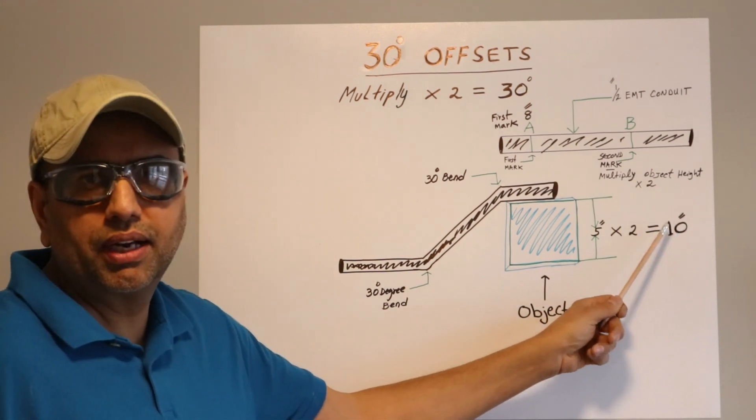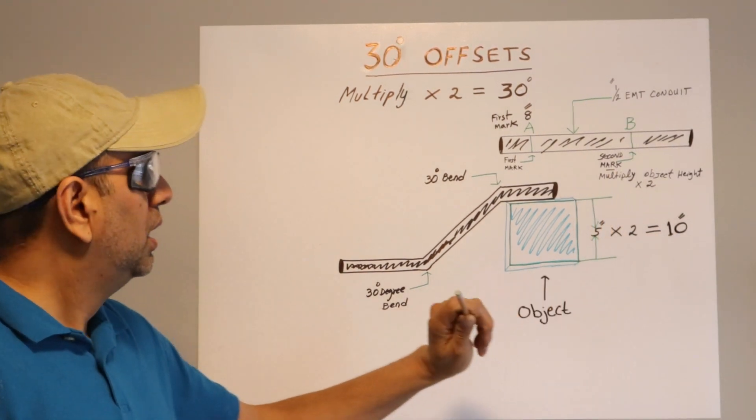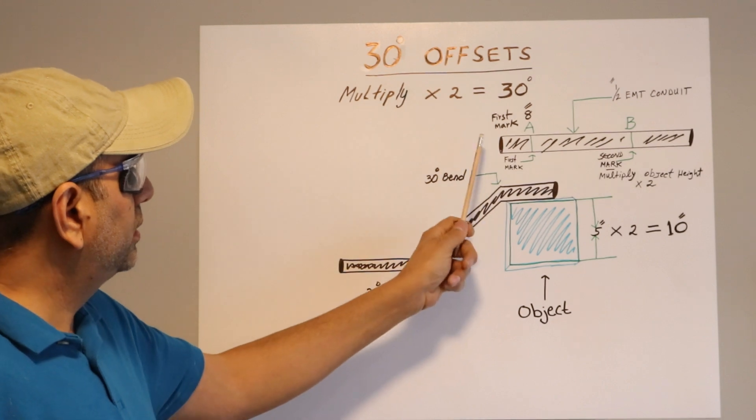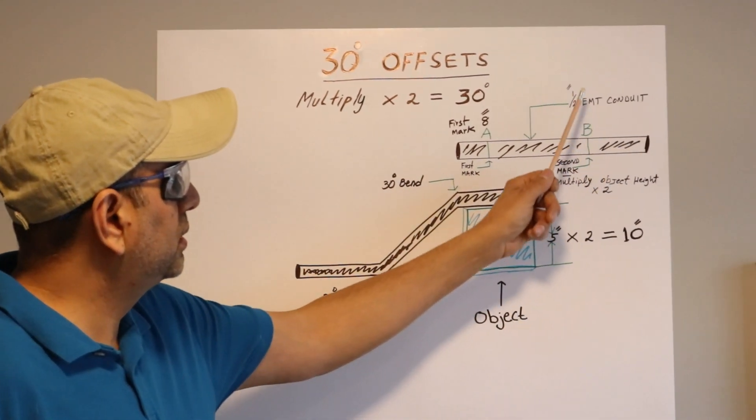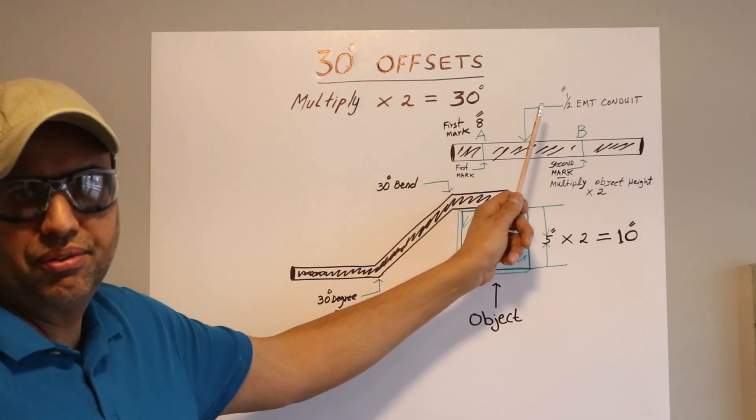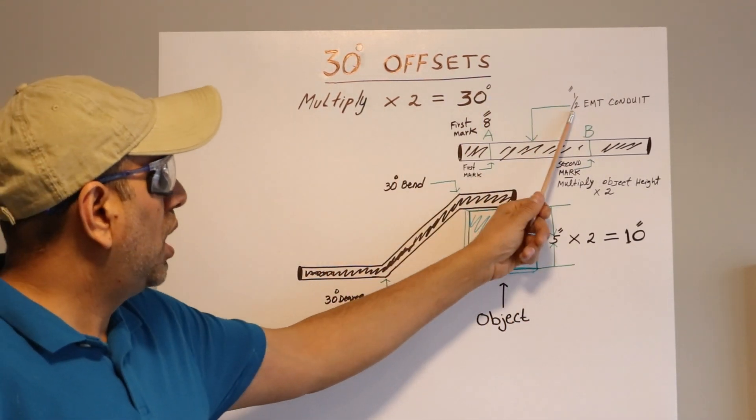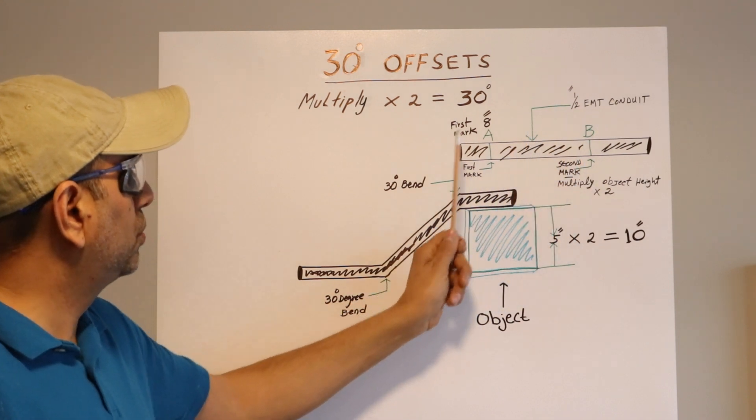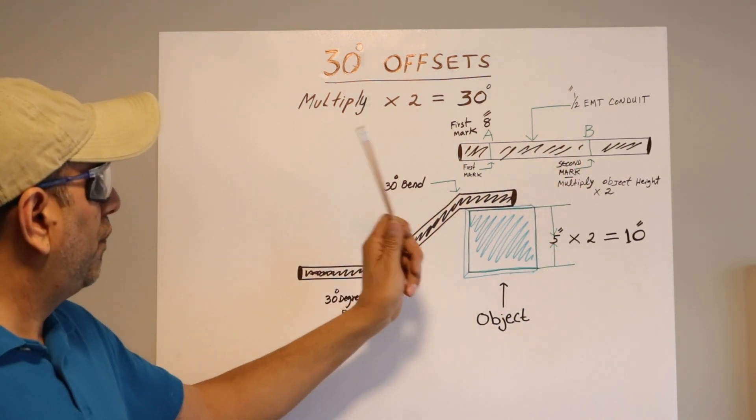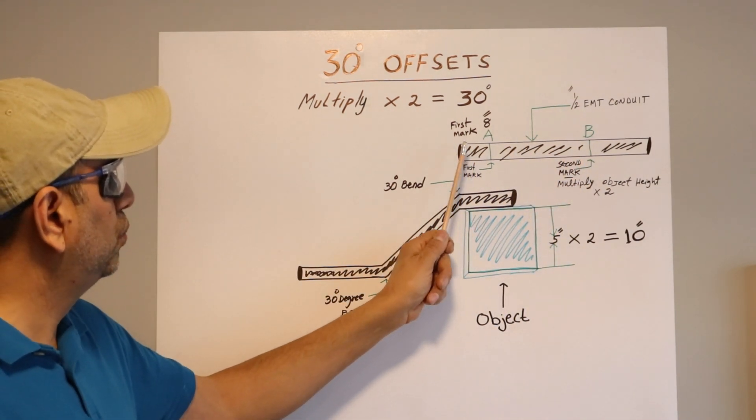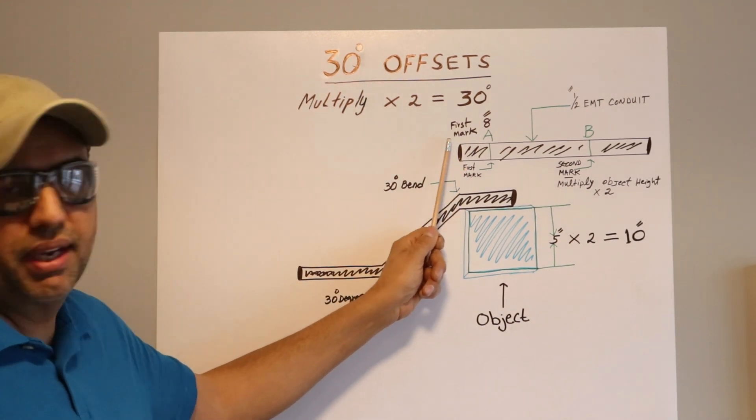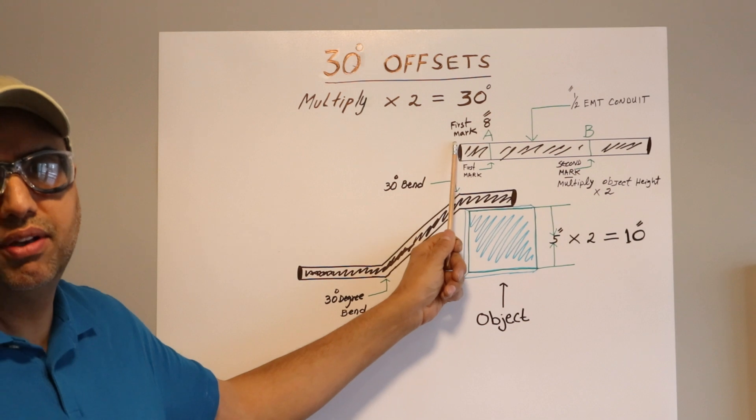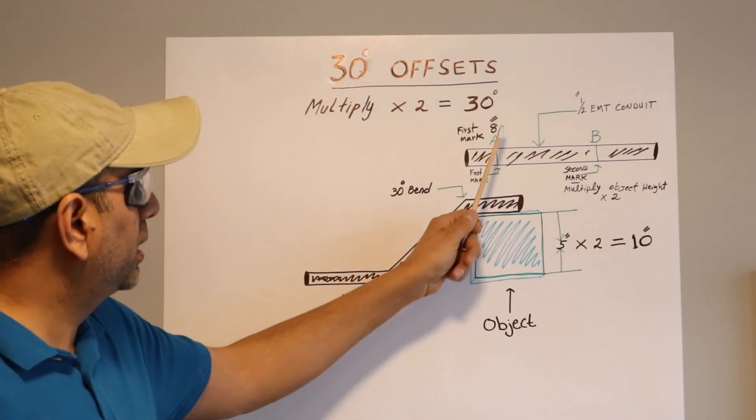Five inches multiplied by two equals ten. So ten inches is our calculation. This is our conduit right here. This is EMT conduit, about a half inch. I will explain you in a minute. So half-inch EMT conduit we are taking. Our first mark of the conduit will be—in my case I'm taking eight inches.